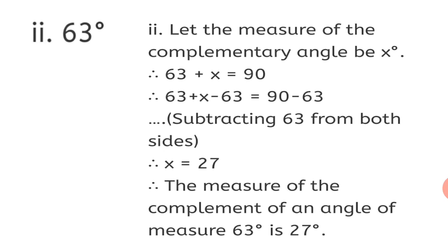Second: 63 degrees. Let the measure of the complementary angle be x degrees. Therefore, 63 plus x equals 90. Subtracting 63 from both sides: 63 plus x minus 63 equals 90 minus 63. Therefore, x equals 27. The measure of the complement of an angle of measure 63 degrees is 27 degrees.